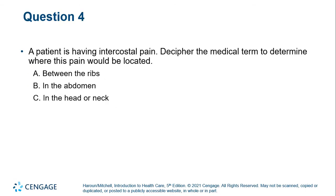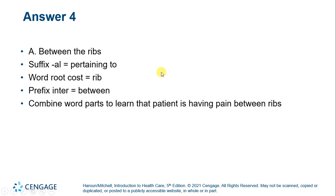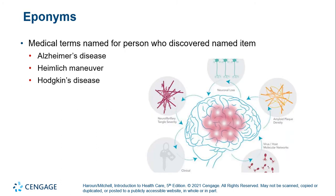If a patient is having intercostal pain, where would the pain be located? That's an example of a healthcare professional having to interpret and translate this medical term. It means between the ribs. 'Al' is pertaining to, 'cost' means rib, and 'inter' means between.